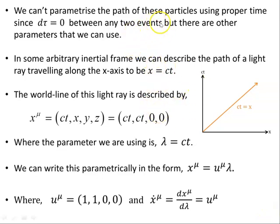Now we can't parameterize the path of these particles using proper time since the tau is zero between these two events, but there are other parameters that we can use. You can imagine in some arbitrary inertial frame, we can describe the path of a light ray traveling along the x-axis to be x equals ct. A plot of ct versus x shows you this diagonal line here. The world line of this light ray is described by x mu is ct, ct, 0, 0. So just motion along the x-axis here. Where the parameter we are using is lambda equals ct, c is the speed of light and t is coordinate time.